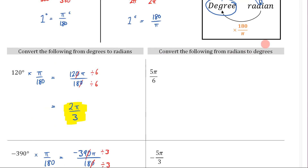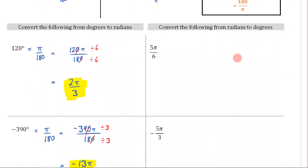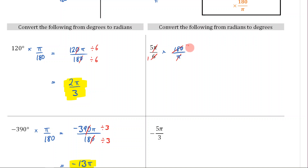Now going from radians to degrees, we multiply by 180/π. The π cancels, leaving 6 and 180. Dividing both by 6 gives 30, and then 5 × 30 = 150. So the answer is 150 degrees.